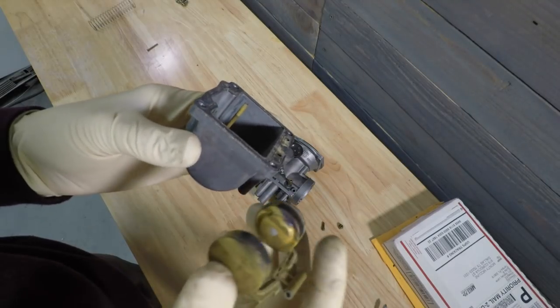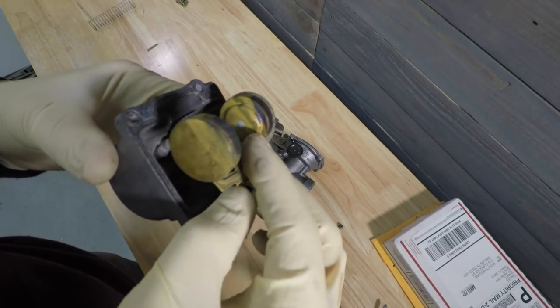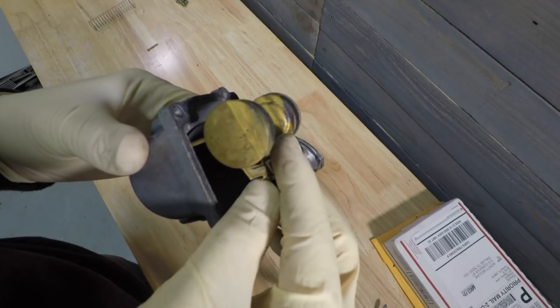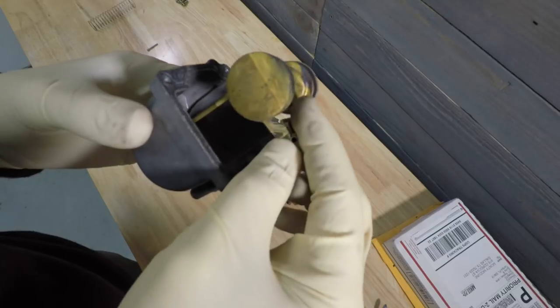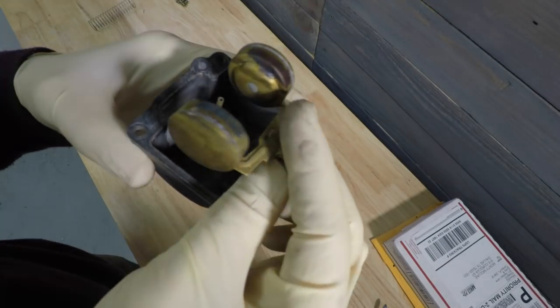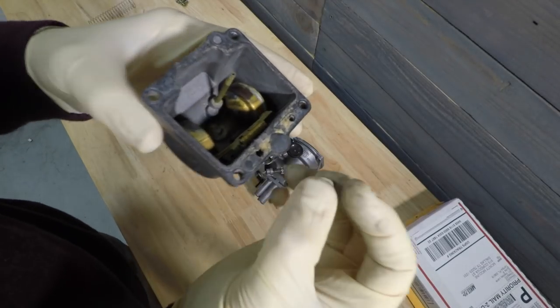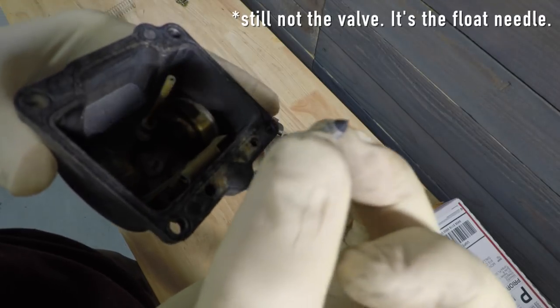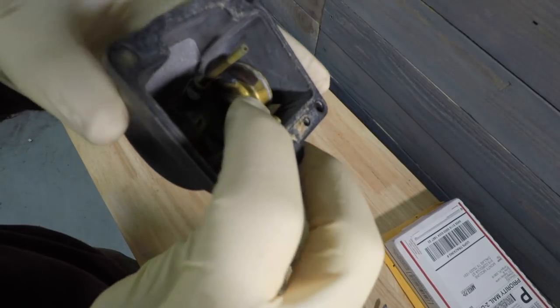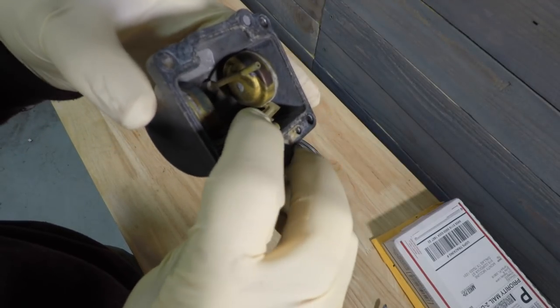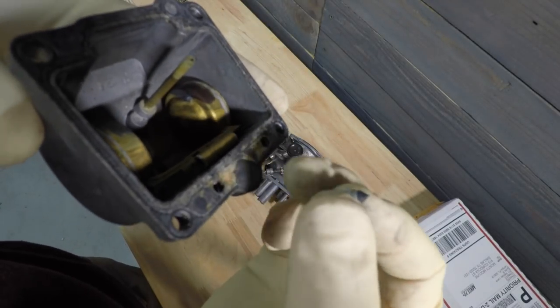So the bowl holds the fuel and the float and the float valve helps keep the right amount of fuel in the carburetor at all times before it's burnt up. So when there's no fuel in the bowl, the float sits down like this and it opens the valve. This guy opens the valve and allows fuel to fill into the bowl. As the fuel is filling into the bowl, the float begins to rise and at a certain point when the fuel is at the right level in the bowl, then the float valve...